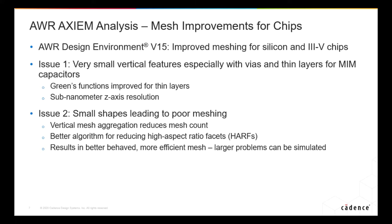The other thing we've improved quite a bit is meshing — we're always working on meshing. Any numerical EM method is only as good as its mesh. We've reduced the mesh count and continue to work on a better conditioned mesh, meaning we get fewer HARFs — high aspect ratio facets. Think of a sliver, a needle, a long skinny triangle: those are bad for the matrix. You want equilateral triangles and squares, not long skinny rectangles. We have a better meshing algorithm that leads to more efficient meshing, allowing us to do larger problems.